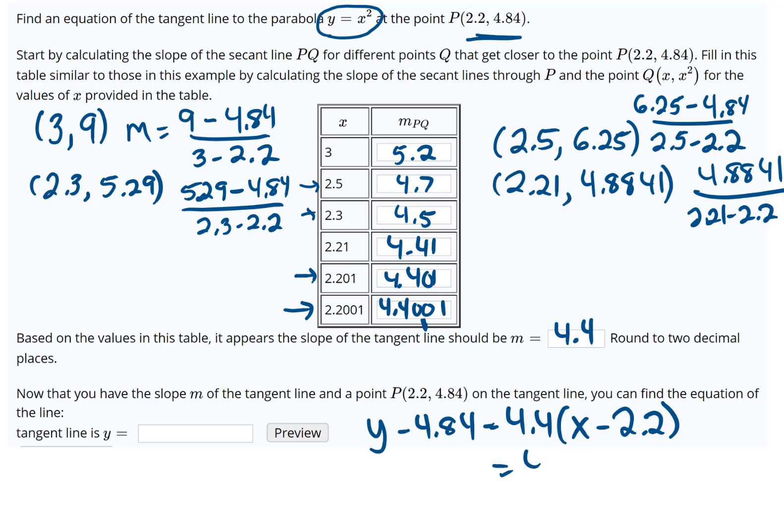So we'll have 4.4x, and here we have the 4.4 distributed to the negative 2.2, but then we're going to add the 4.84 to that. It looks like when we do that we get negative 4.84. So here is our equation of our tangent to the curve at that point.